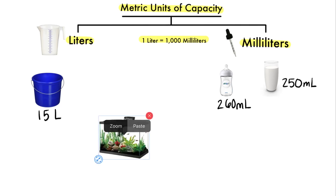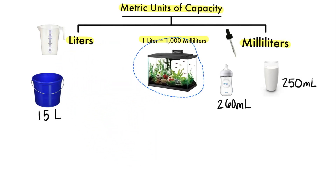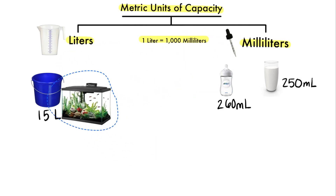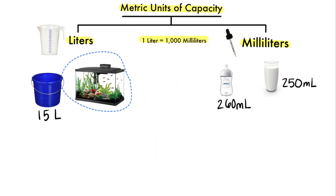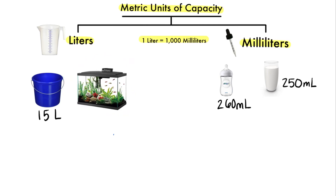Now what about a fish tank? Would you use liters or milliliters? I say liters, and a fish tank has a capacity of about 9 liters.